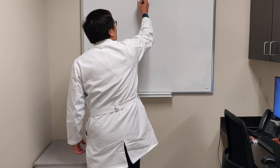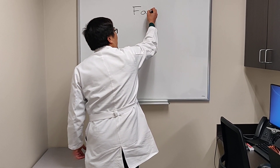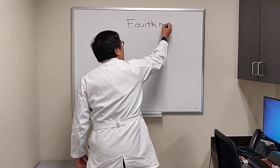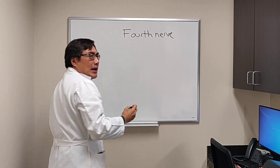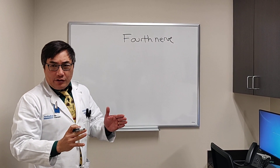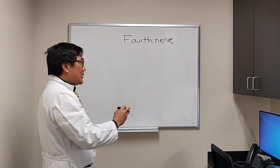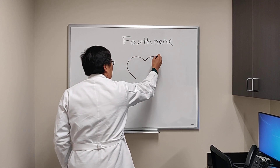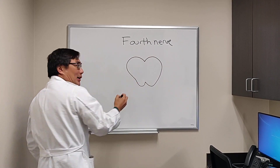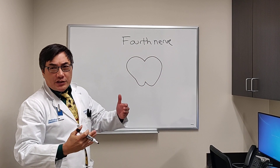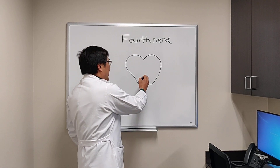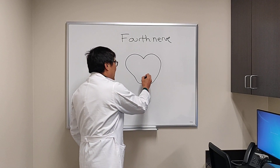Today we're going to be talking about the fourth nerve. The fourth cranial nerve begins like all the other cranial nerves as a nucleus. When we're talking about the ocular motor system, it's the dorsal portion of the brainstem.